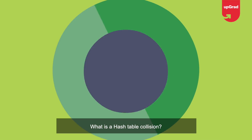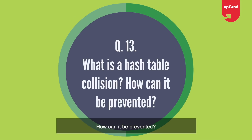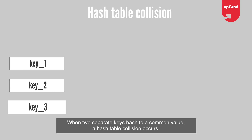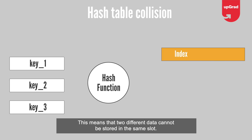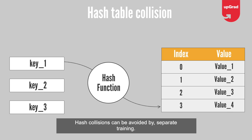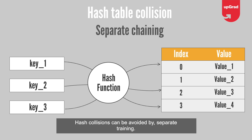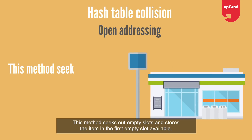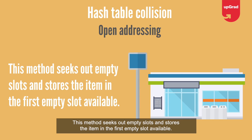What is a hash table collision and how can it be prevented? When two separate keys hash to a common value, a hash table collision occurs, meaning two different data cannot be stored in the same slot. Hash collisions can be avoided by separate chaining, where a data structure is used to store multiple items hashing to a common slot, or open addressing, which seeks out empty slots and stores the item in the first empty slot available.